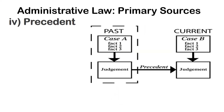Precedent. A precedent is an earlier event or action that is regarded as an example or guide to be considered in subsequent similar circumstances. It is a principle or rule established in a previous legal case that is either binding or persuasive for a court or tribunal when deciding subsequent cases with similar issues or facts. It is also called judge-made law. Some administrative laws are made mandatory by the mandate of the court, directive order, and order of court. Pursuant to Article 116 of the Interim Constitution of Nepal, the precedent rendered by the Supreme Court remains of equal status to other statutory laws.